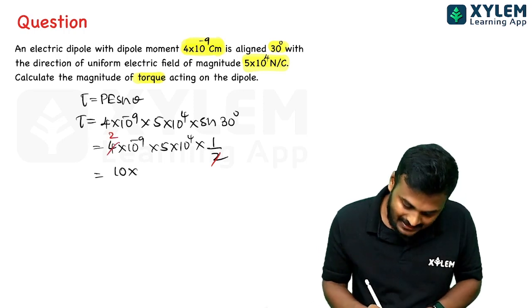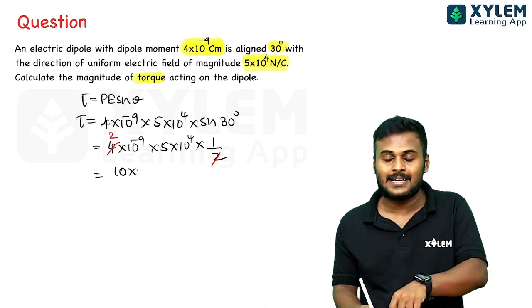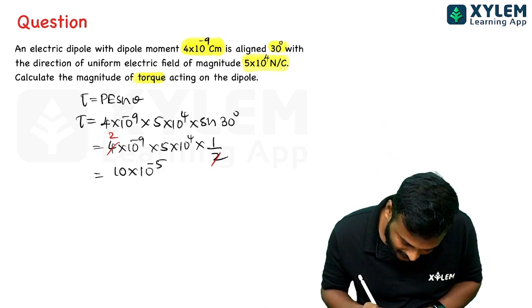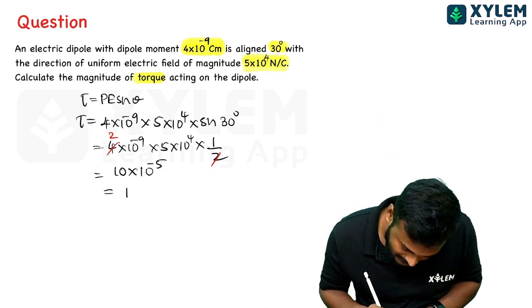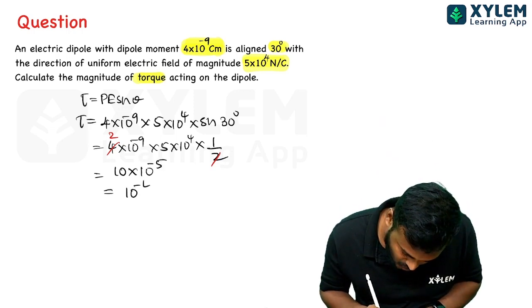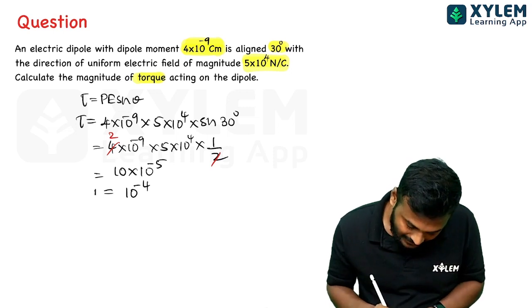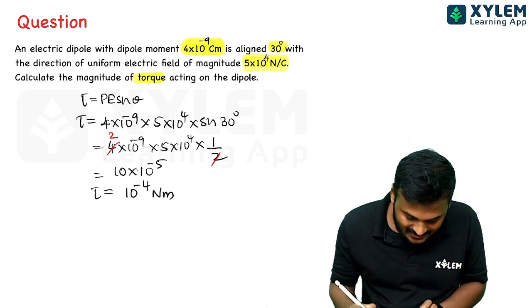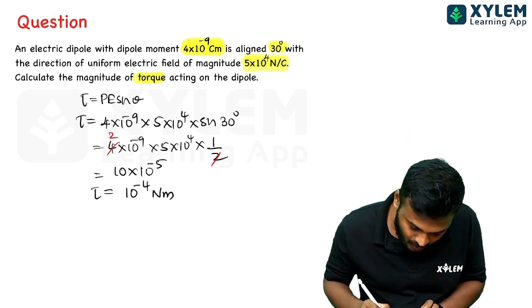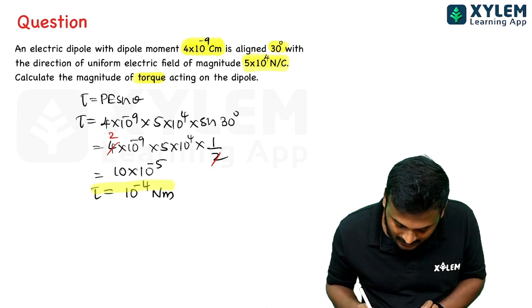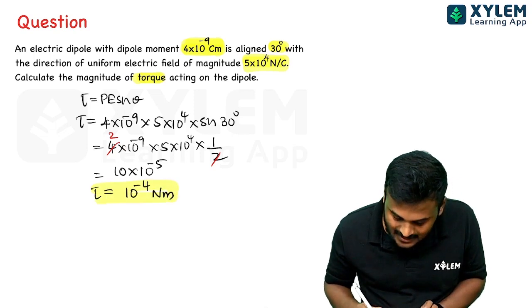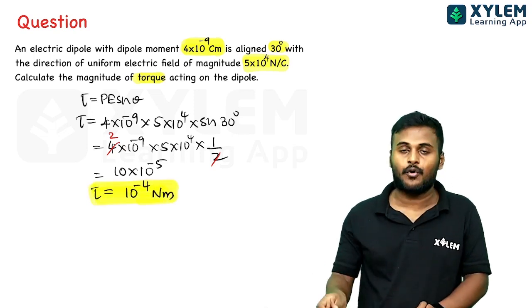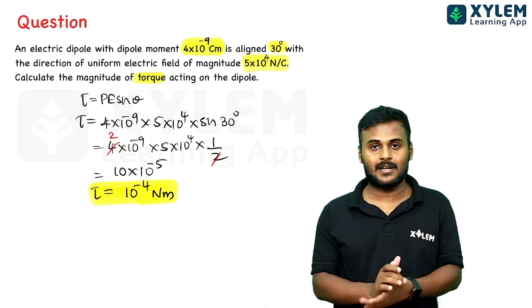Sin 30° = 1/2. So τ = 4×10⁻⁹ × 5×10⁴ × (1/2) = 10⁻⁴ N·m. The final answer is torque = 10⁻⁴ Newton meter.